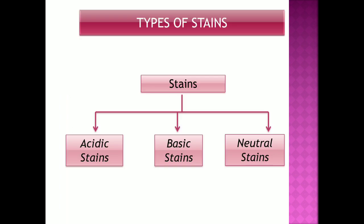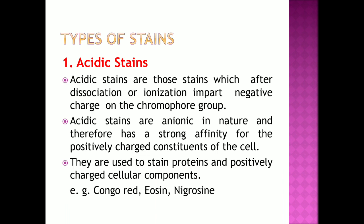Types of stains: There are three main types of stains — acidic stains, basic stains, and neutral stains. Acidic stains are those stains which after dissociation or ionization impart a negative charge on the chromophore group. Acidic stains are anionic in nature and therefore have a strong affinity for the positively charged components of the cell. They are used to stain proteins and positively charged cellular components.